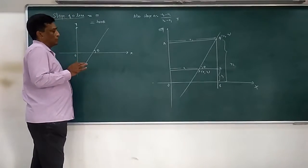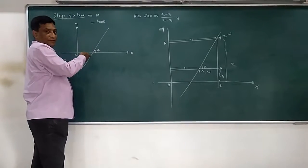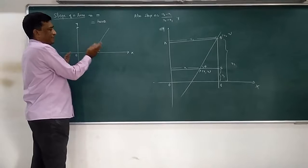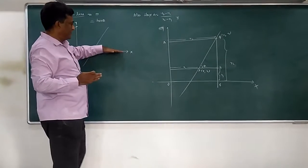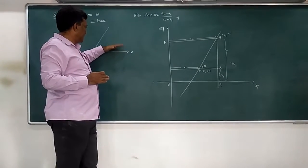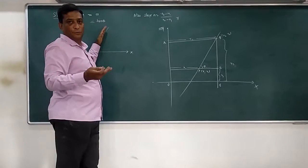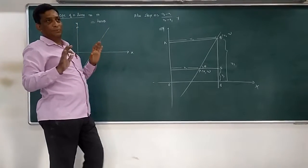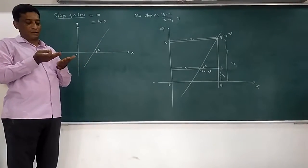Basically slope means inclination. You can see how much it is inclined with the x-axis. Here reference is the x-axis, how much it is inclined with the x-axis gives you slope. In simple words, slope means inclination.